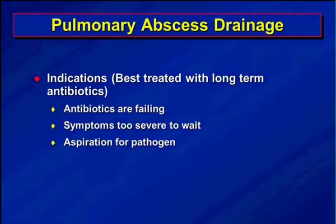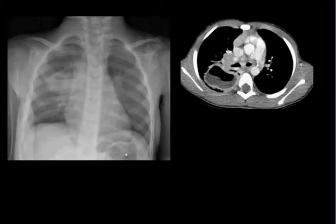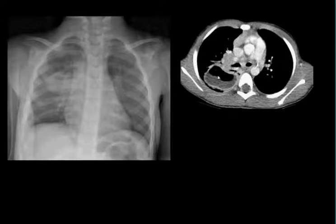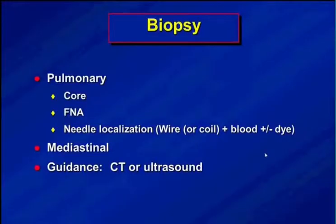Shifting to lung abscesses: indications are few. Most patients do very well with long-term antibiotics. We drain them if antibiotics aren't working, symptoms are too severe, or they can't leave the hospital due to oxygen dependence or fever. Sometimes we drain just for aspiration to identify the organism. One case: chest X-ray showed a collection with air, CT confirmed the fluid and air level. Abscesses can be difficult to access with ultrasound because you're always looking through air, so this case was done with CT. A drain was placed, the collection collapsed, and the patient got better.